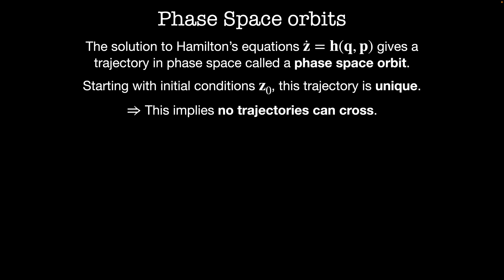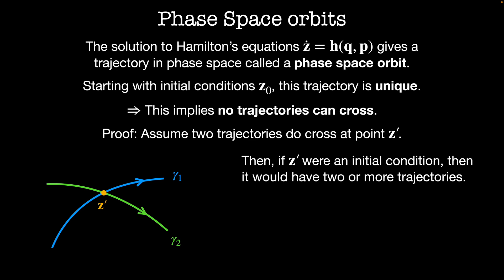A consequence of this is that no two trajectories can cross. We'll prove this by contradiction. Imagine that we have two trajectories that do cross at some point z prime. Then if z prime were an initial condition, it would have two or more trajectories starting from that point and this violates uniqueness. This implies that phase space orbits can never cross at any point in time.